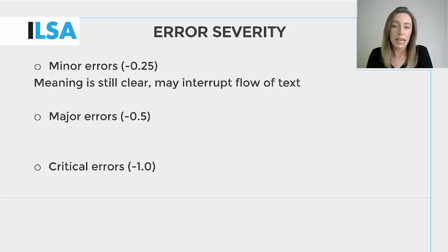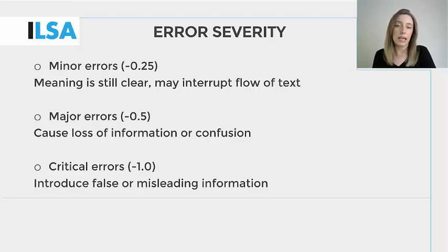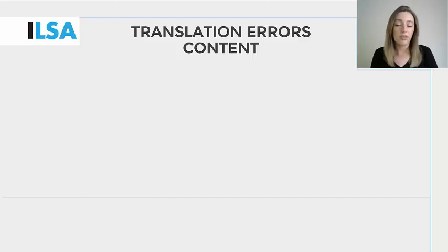Minor errors mean that the text can be followed, but the meaning or the flow of the text may sometimes be interrupted, making it difficult to recognise original words. Major errors do not result in new meanings, but do omit ideas from the text. Critical errors present factual mistakes or misleading information that create a new sense in the target text. When you analyse your re-spoken text with the NTR model, you may incur translation errors, which can be either content or form errors. So first, let's take a look at the three types of content errors.